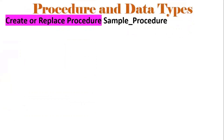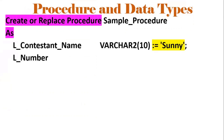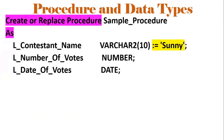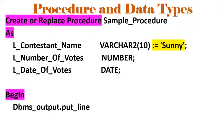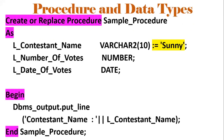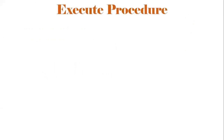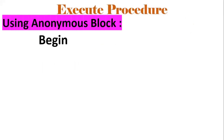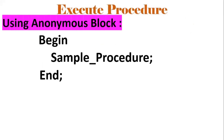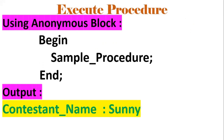In this slide we cover how to write a procedure and what are the data types. The syntax is: CREATE OR REPLACE PROCEDURE procedure_name. These are the local variables: L_contestant_name, L_number_of_votes, and L_date_of_votes, where VARCHAR2, NUMBER, and DATE are the data types. DBMS_OUTPUT.PUT_LINE is used to see the result on the console. To execute any procedure using an anonymous block, we write BEGIN, then the procedure name, then END. The output would be the contestant name, Sunny.